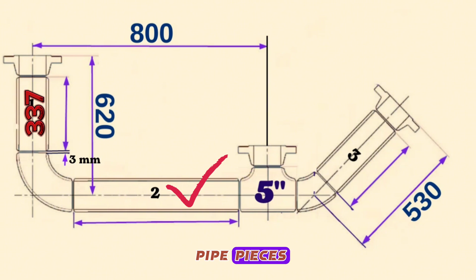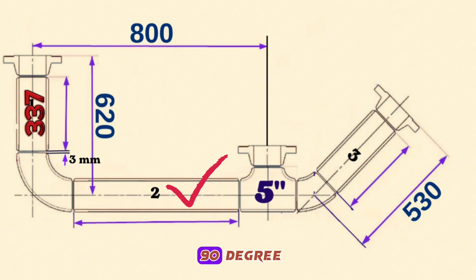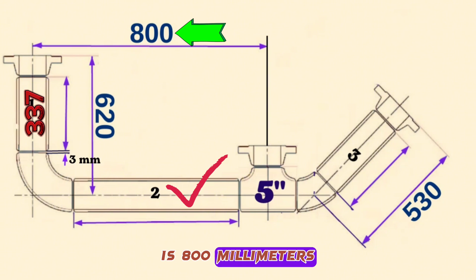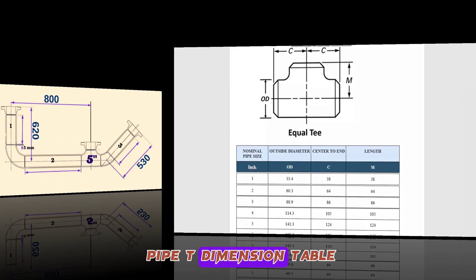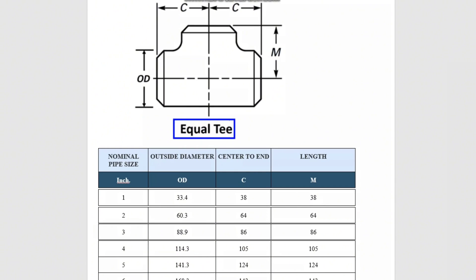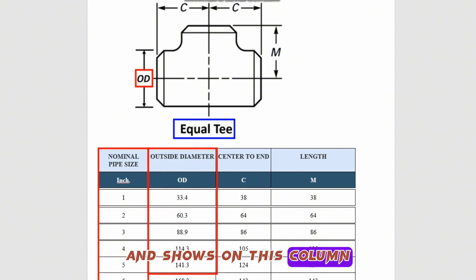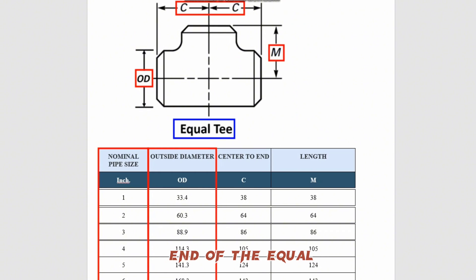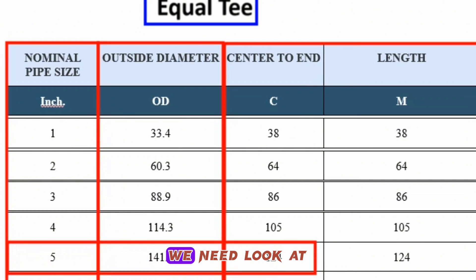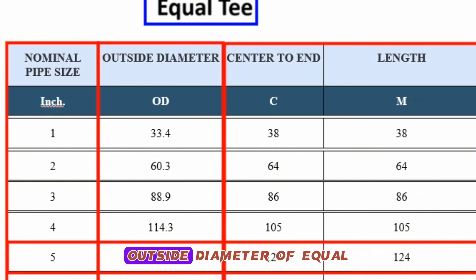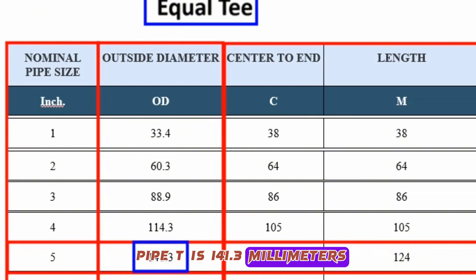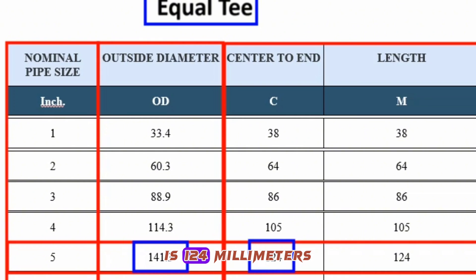Let's calculate the length of the 5-inch pipe piece Item 2, used in the fabrication of this pipeline. In this section, the total distance from the center of the 90-degree butt weld elbow to the center of the equal pipe tee is 800 millimeters. Let's look at the pipe tee dimension table to find the dimensions of the 5-inch equal tee. The NPS column shows nominal pipe size and the D column shows outside diameter. For the 5-inch row, the outside diameter of the equal pipe tee is 141.3 millimeters, and the center-to-end is 124 millimeters.